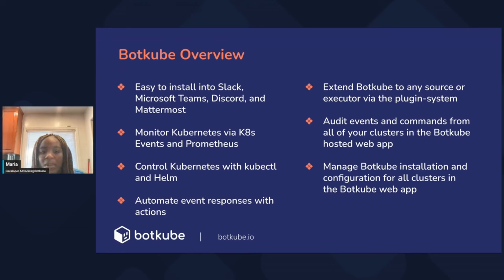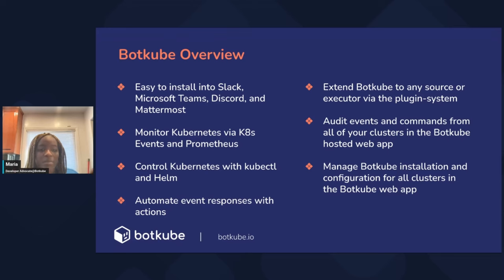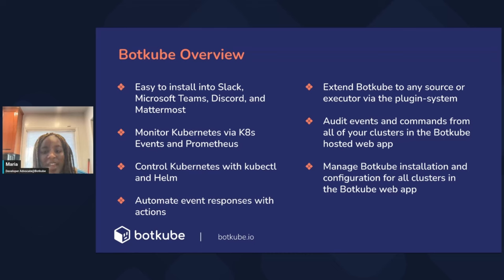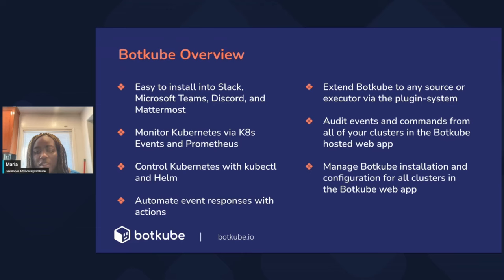Botkube is split via source and executor plugins. Source plugins — like Kubernetes events and Prometheus — watch alerts and hook them right into your communication platform. The executor side allows you to act on those alerts. For example, if you're using the Argo CD source plugin and see an issue, you can act on it by running a kubectl command all within Slack without switching context. Through the audit log, you can see all that information in one place and get insight on team performance and cluster access.